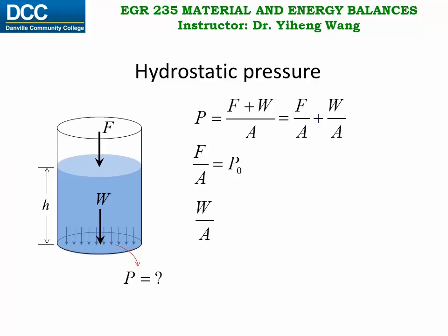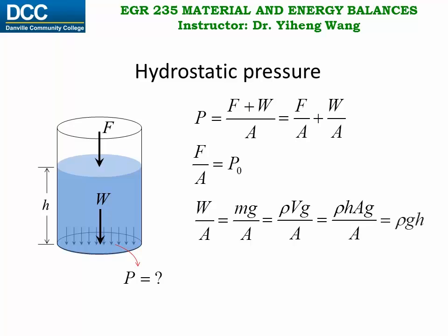Therefore, the term W over A: W is the weight force which equals mass M times g, the gravitational acceleration constant. Mass equals rho, the density of the fluid, times the volume. And the volume equals height times area. Area can cancel out. This simplifies to rho·g·h. Therefore, we derive the equation that pressure equals P zero plus rho·g·h.